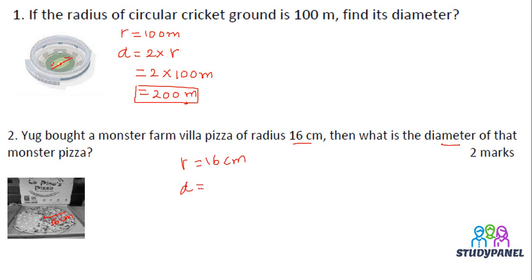So D is 2 times radius. That is, 2 into r. So 2 into 16 cm. So 2 into 16 cm is 32 cm.